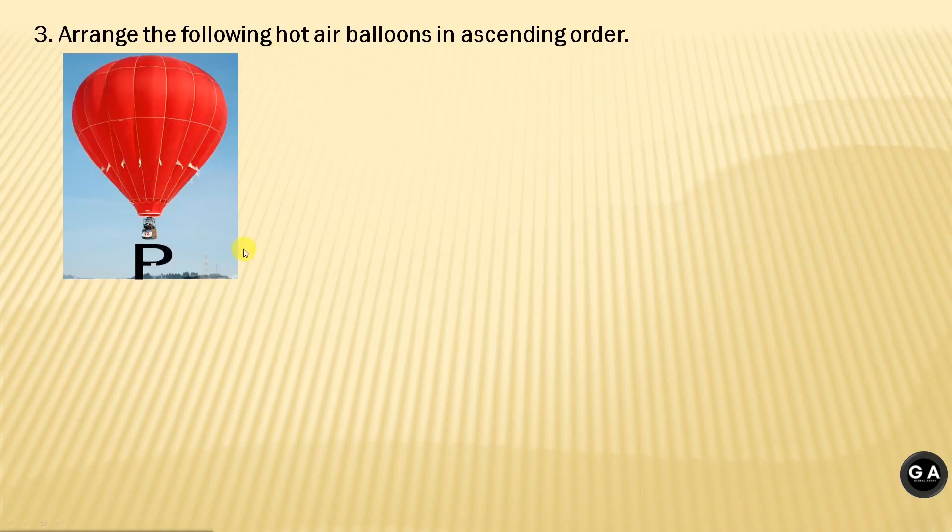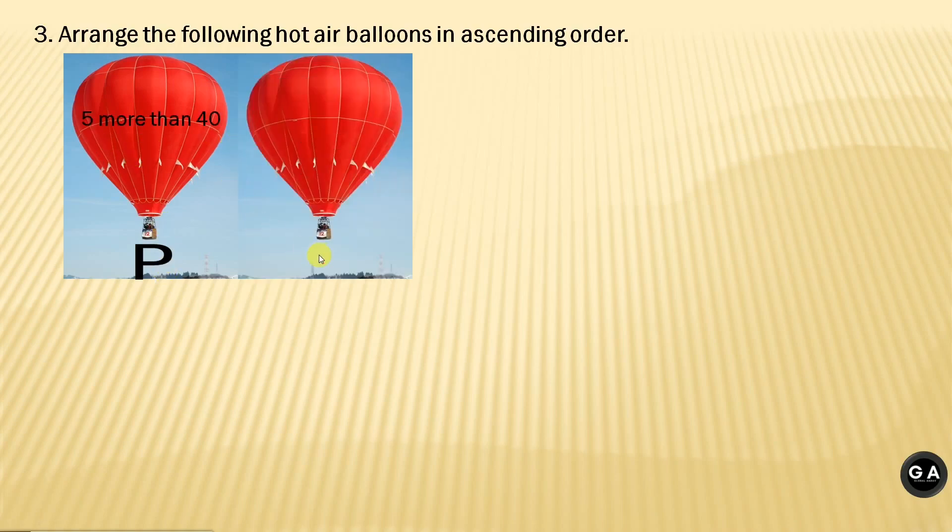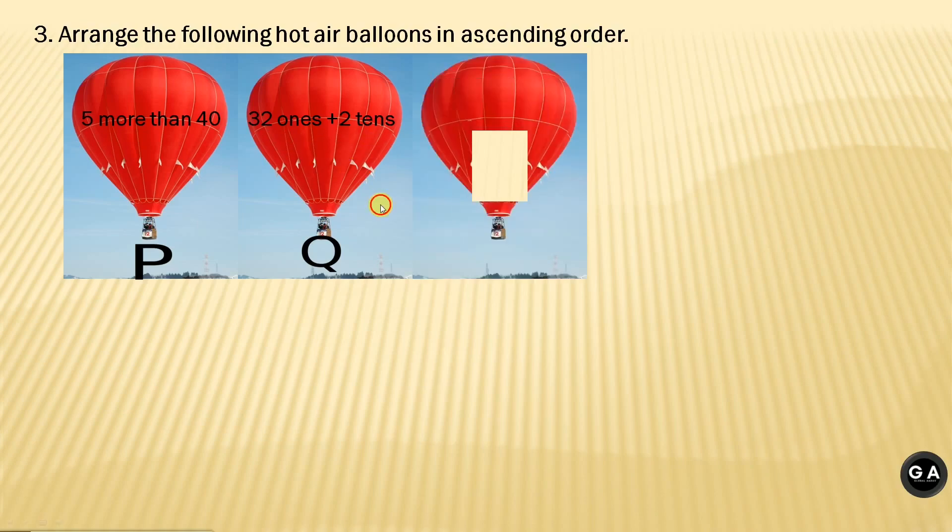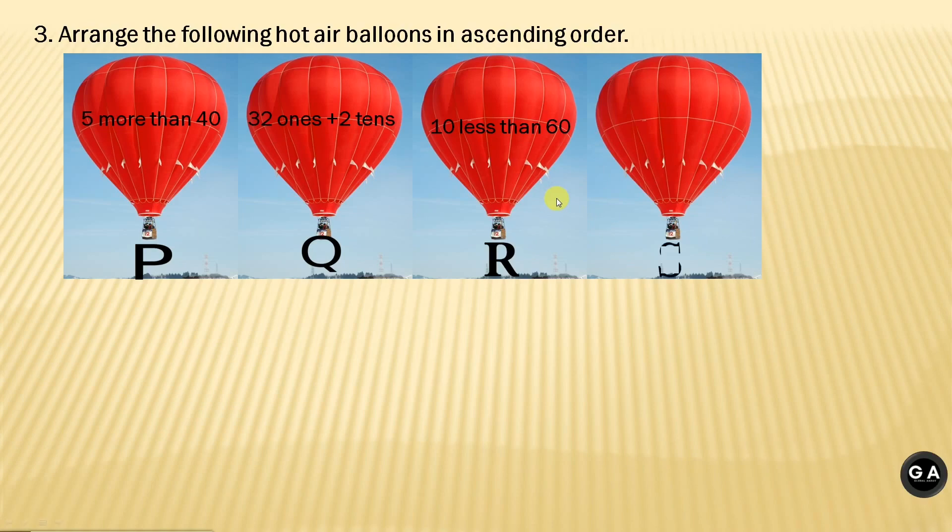Let's move on to question number 3. Arrange the following hot air balloons in ascending order. Balloon P: 5 more than 40. Balloon Q: 32 ones plus 2 tenths. Balloon R: 10 less than 60. And balloon S: 86 ones minus 3 tenths. As usual, 4 options are there.